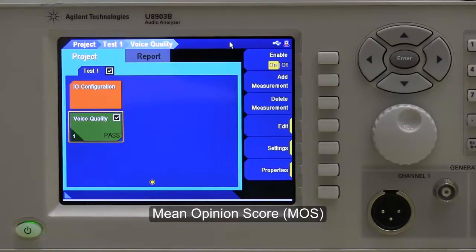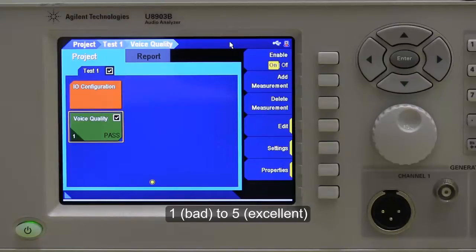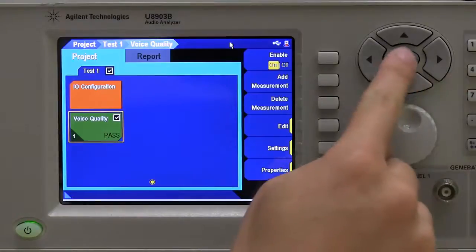which uses a scale from 1, which is bad, to 5, which is excellent. Now, the U8903B already completed the voice quality test. Let us look at the results.